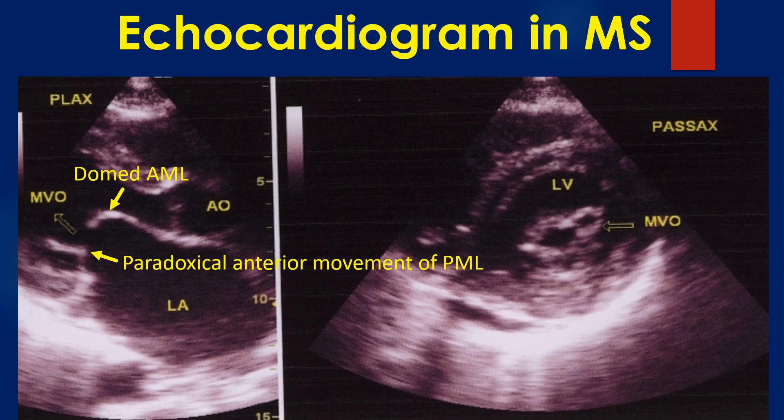Transmitral gradient is better assessed in the apical 4-chamber view by Doppler. Associated tricuspid regurgitation, if present, can be seen on the apical 4-chamber view, which will also help in estimating the right ventricular systolic pressure from the TR gradient.